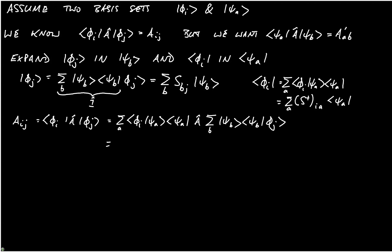And that's equal to the sum over A and B of S dagger_IA and then we have A'_AB and then we have S_BJ. So, we can write that the matrix A is equal to S dagger A' S. Now, that's not quite what we wanted. In fact, on the previous page we derived the other way around. We want A'.